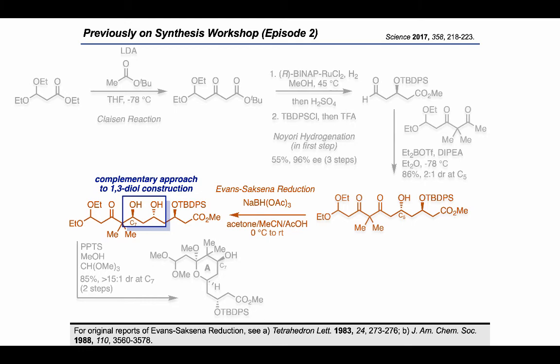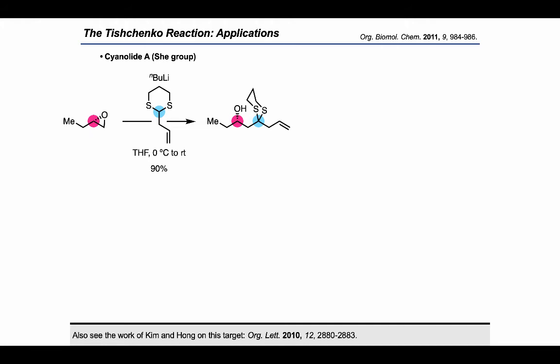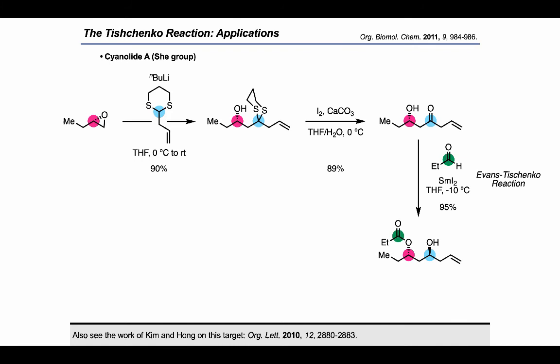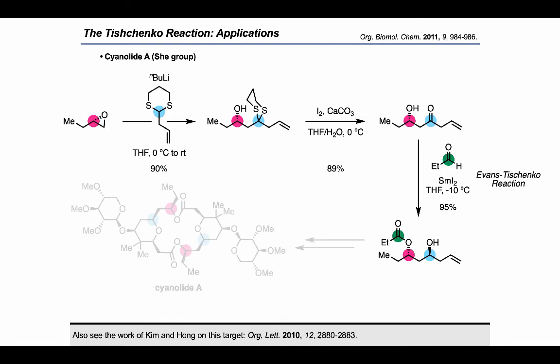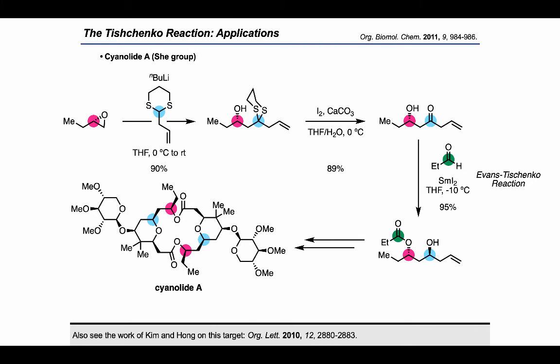Here's another dithiane-based example from the Shi Group. In this work, the authors opened a terminal epoxide with a deprotonated dithiane — a familiar tactic. Then a dithiane deprotection revealed a beta-hydroxyketone, which could be used in an Evans-Tyshenko reaction with propanol. That sequence provided the building block shown, which was carried on to complete the synthesis of cyanolid A. As the final target was put together through a dimerization strategy, the authors were actually able to use their building block to provide four of the stereocenters present in the target molecule.